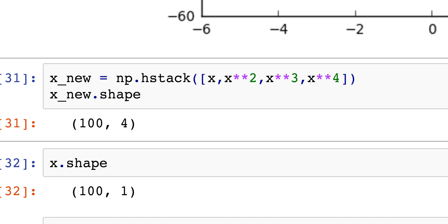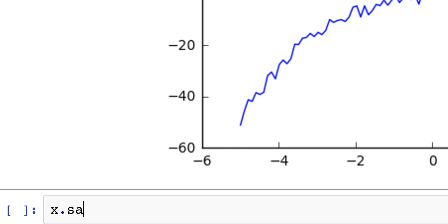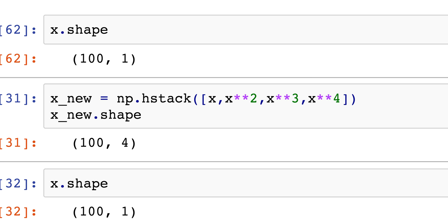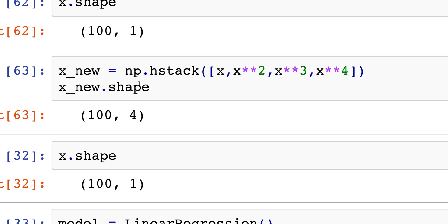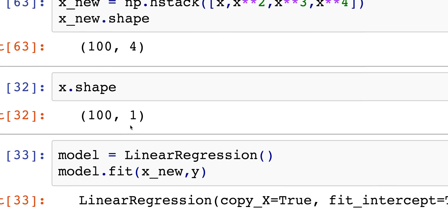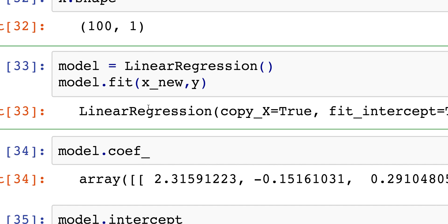Just to remind you, x.shape is 100 by 1, but now my x_new thing is going to be 100 by 4. What I'm going to do is I'm going to fit my x_new to the y.